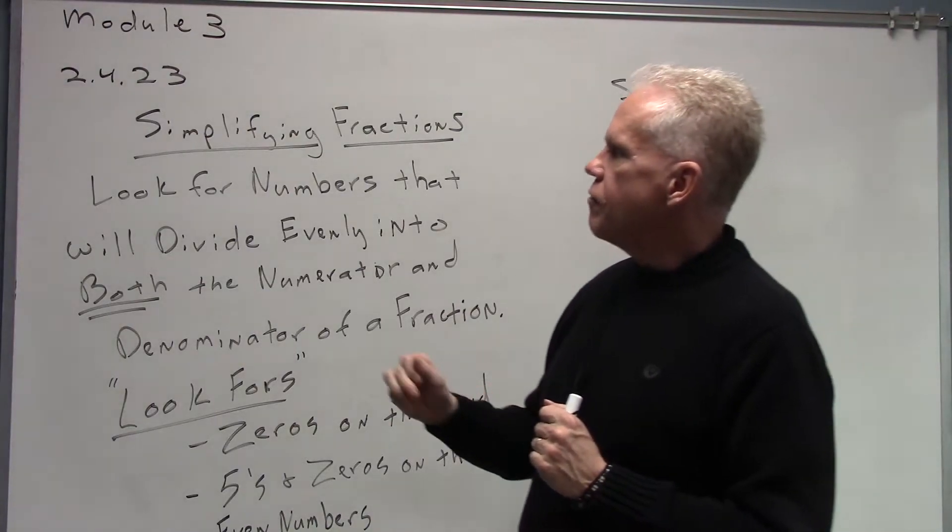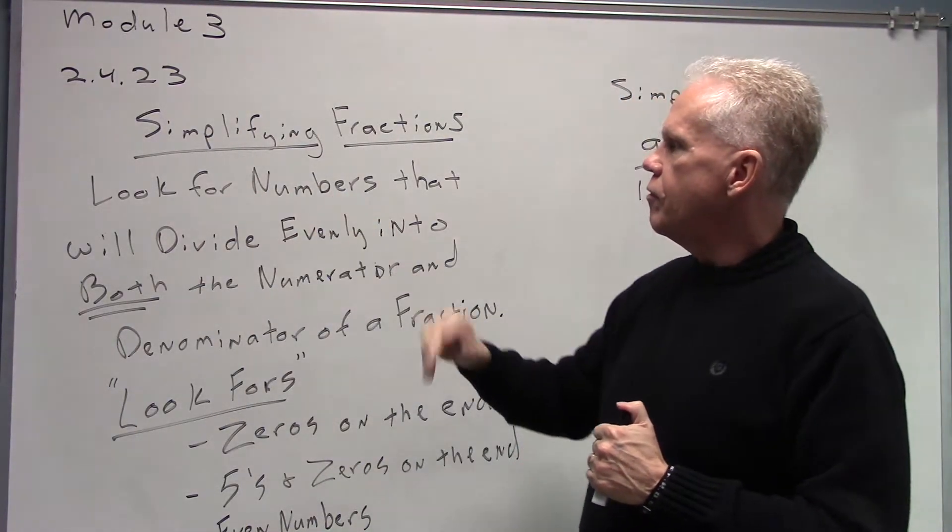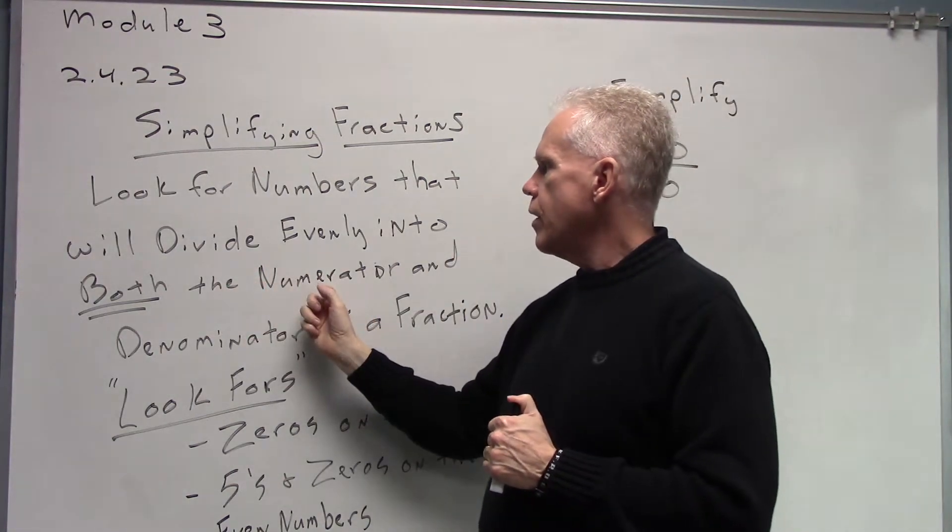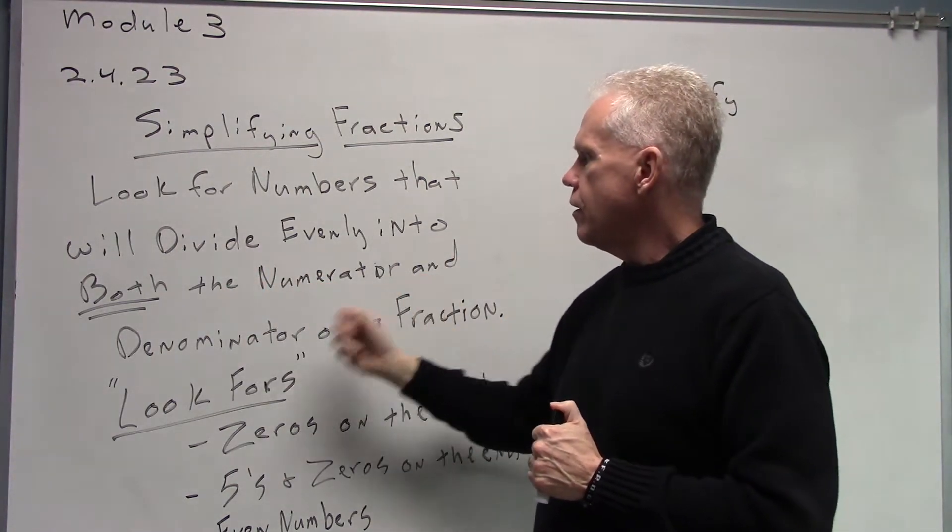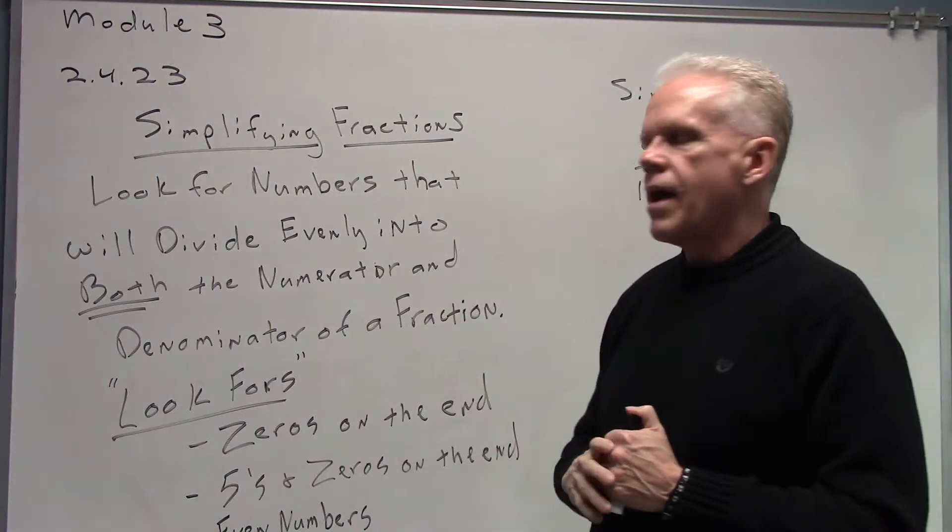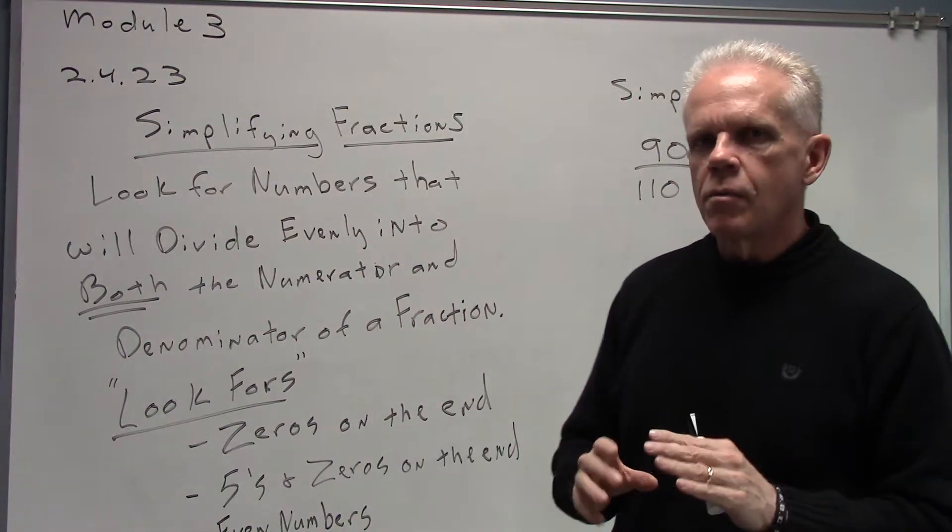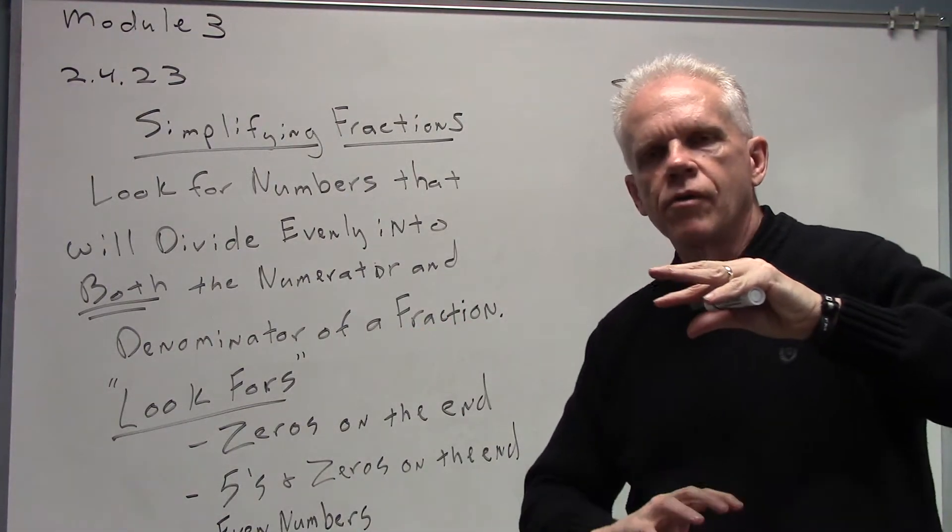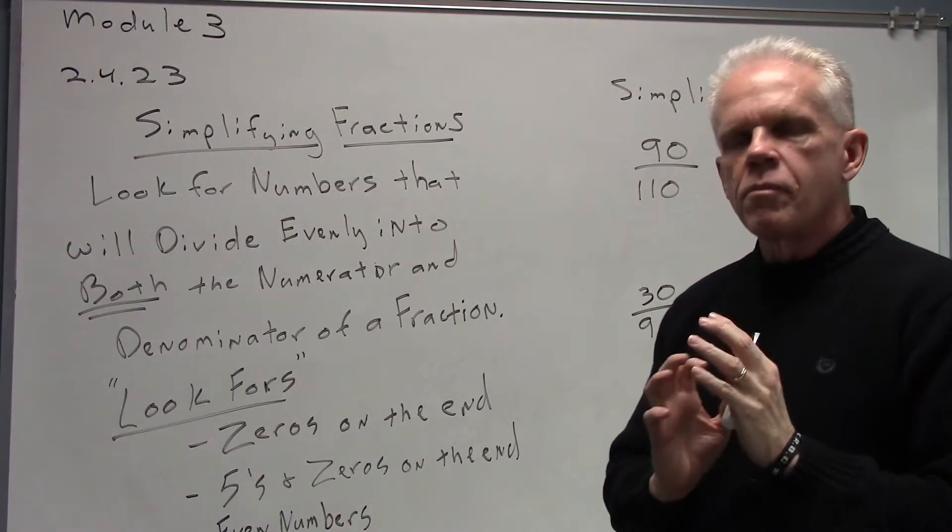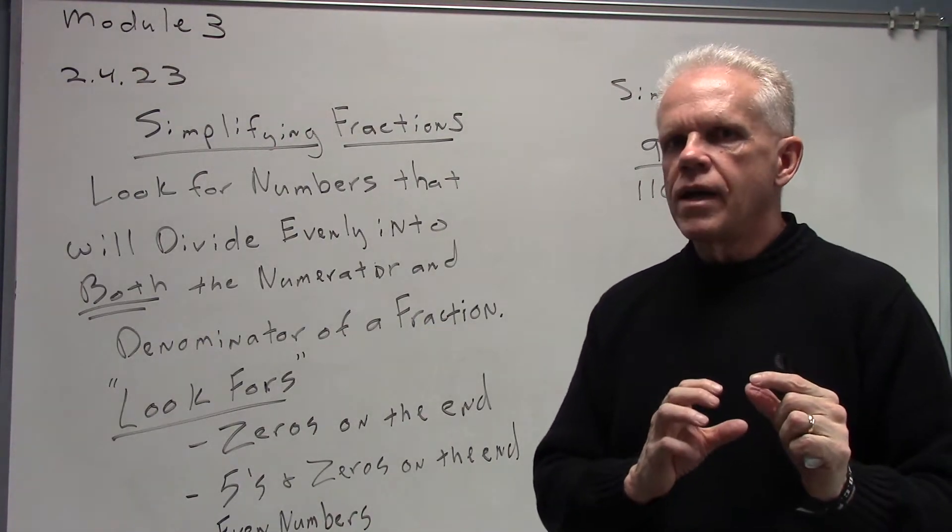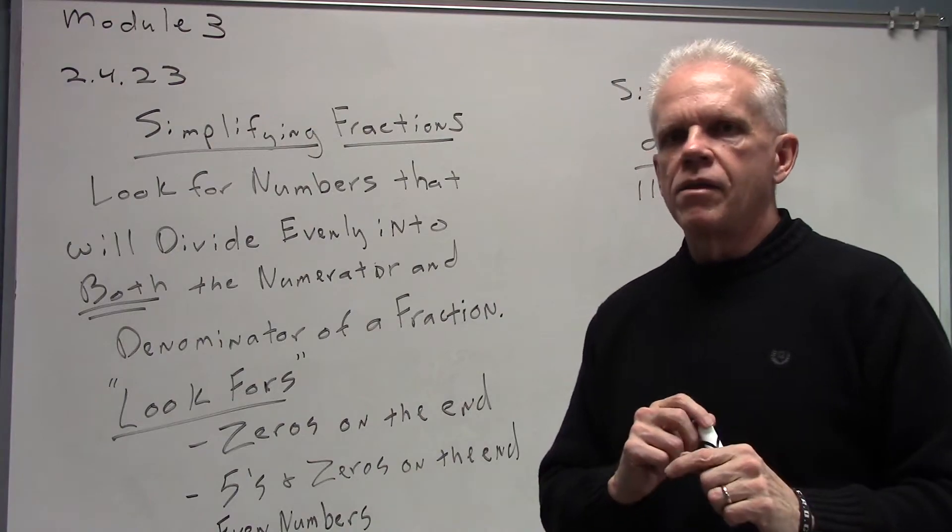To simplify a fraction, what we're going to be doing is looking for numbers that will divide evenly into both the numerator, that is the top, and the denominator, that is the bottom of a fraction. The number that we divide out must divide out of the top and must divide out of the bottom.